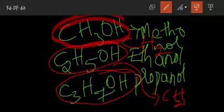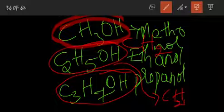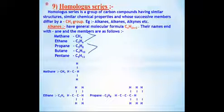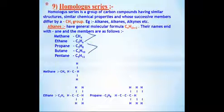So if a series of carbon compounds has a CH2 difference between each compound, that series is called homologous series. Take down this question: What is homologous series? Homologous series is a group of carbon compounds having similar structure, similar chemical properties, whose successive members differ by a CH2 group. Series such as aldehydes, alcohols, and ketones are all called homologous series.